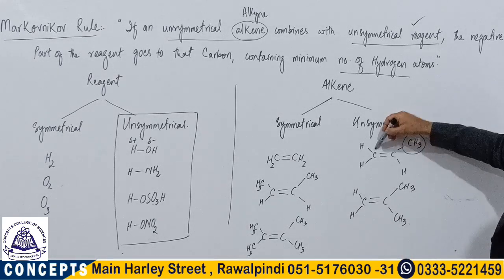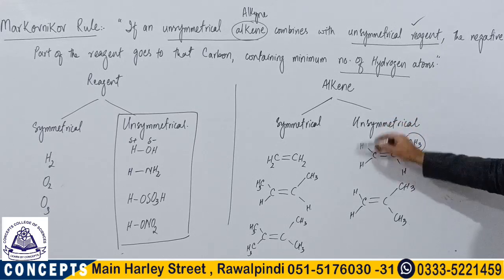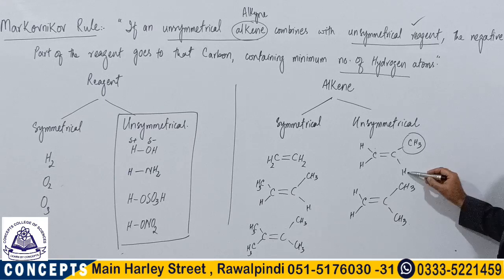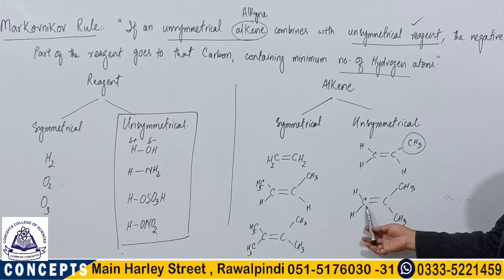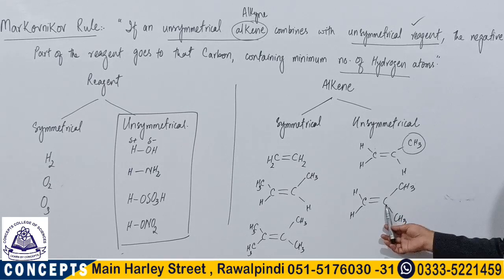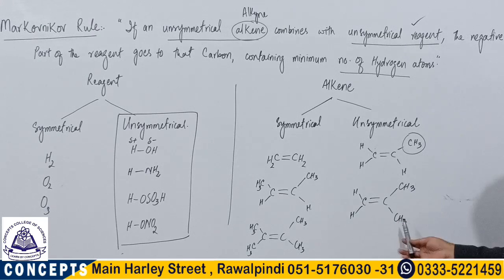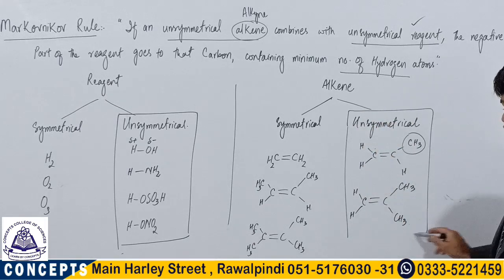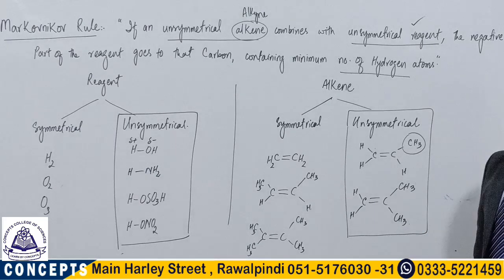For instance, this carbon is forming two covalent bonds with hydrogen, so there are two hydrogens attached to this carbon, and here only one hydrogen is attached to this carbon. Similarly, there are two hydrogens on the left-hand side and this carbon does not have any bond with hydrogen — it only connects itself to the alkyl groups or CH3 groups. So these unsymmetrical alkenes are mainly our components for the definition.